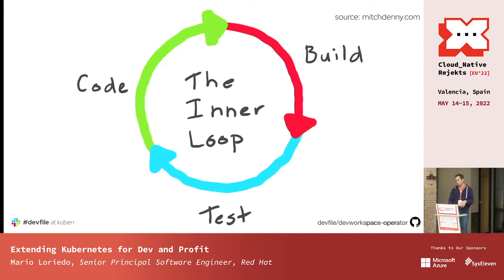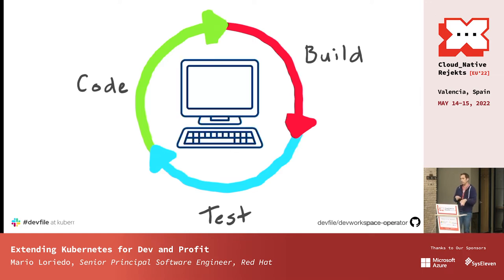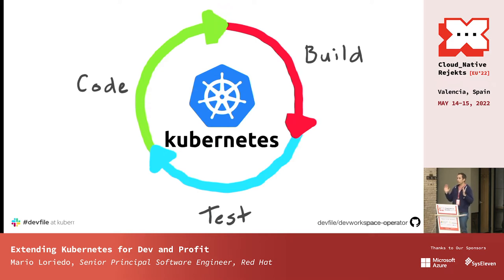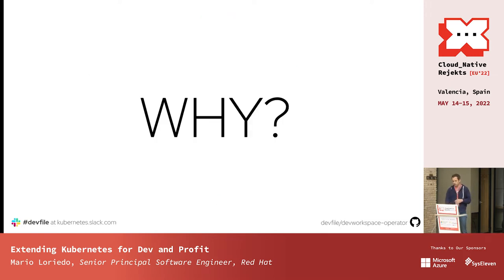The inner loop is what you usually do on your laptop: you code, you build, and then you test. You may use external services, deploy on Kubernetes to test your application. But usually, at least the coding part often happens on your laptop, if not all of the activities. So what about using Kubernetes instead of your laptop for all these activities — everything running there? There are three reasons why we would want to do that.